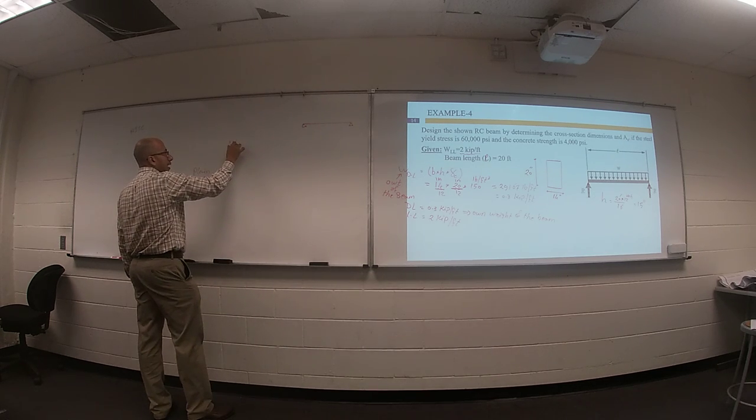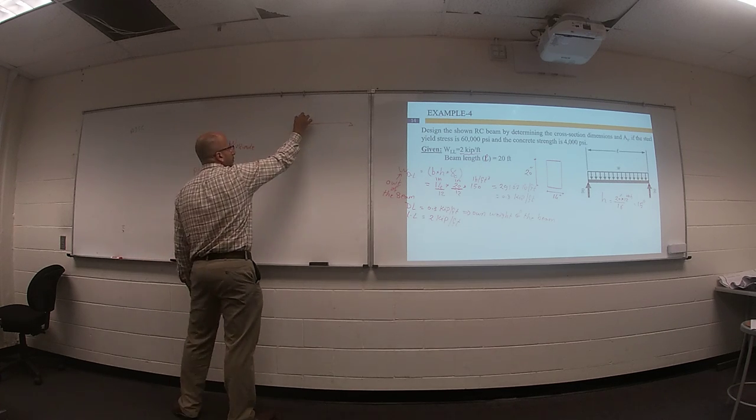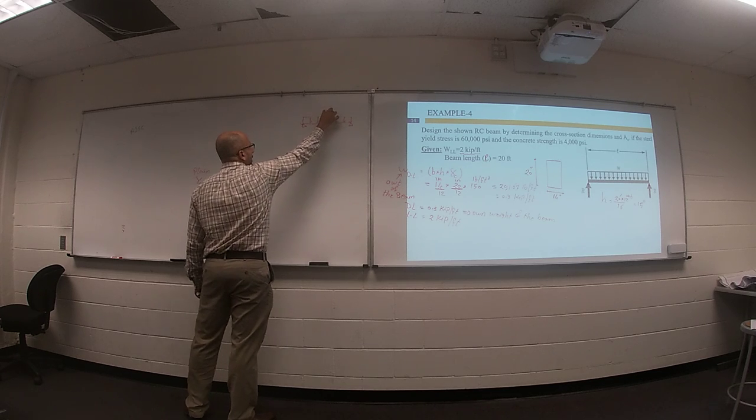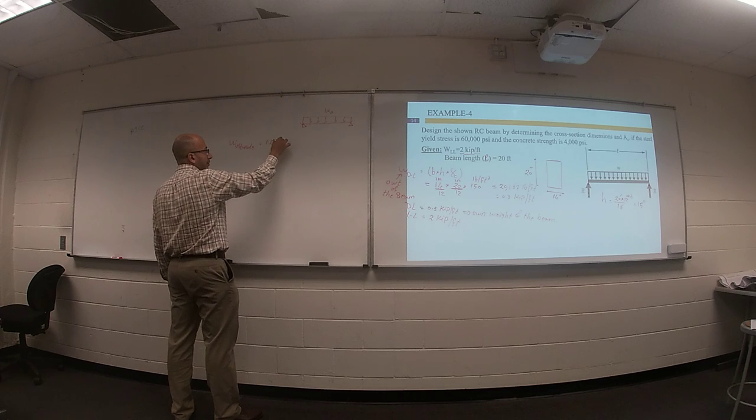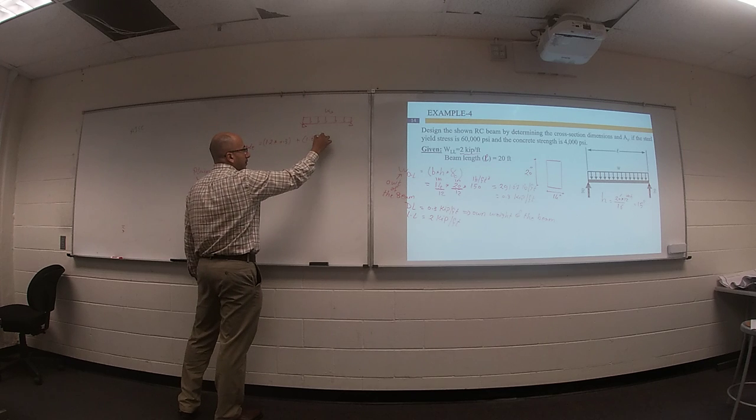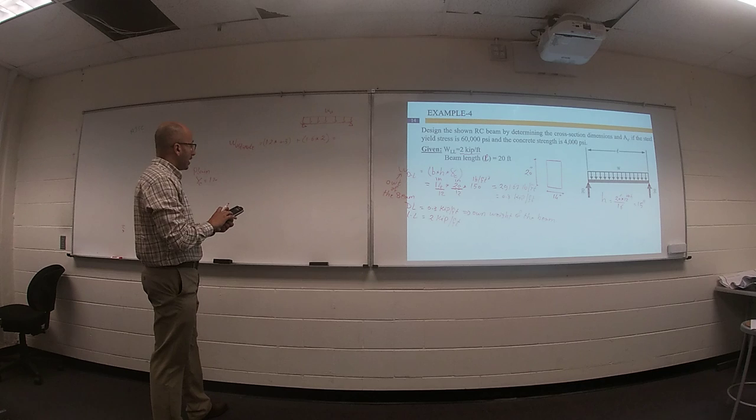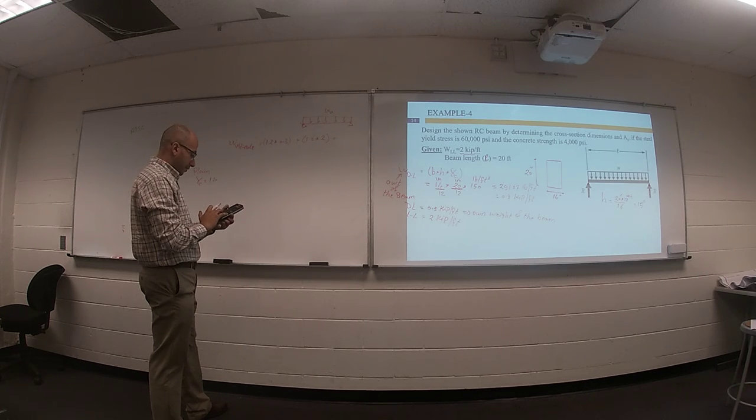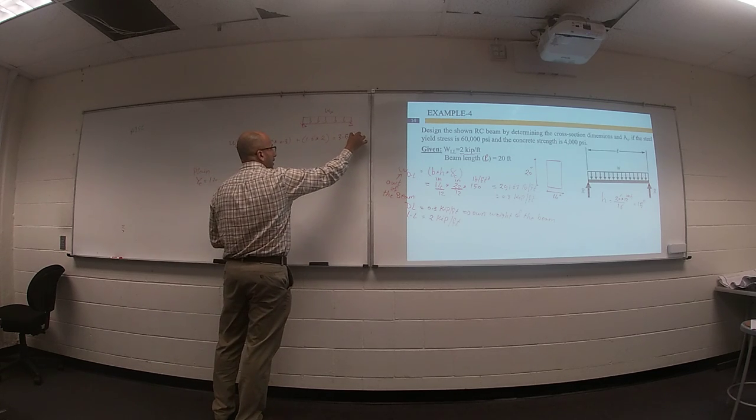Your W ultimate equals 1.2 kips per foot for your dead load plus 1.6 kips per foot for your live load. You can get your ultimate factored load, which equals 3.5 kips per foot.